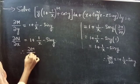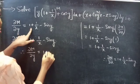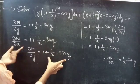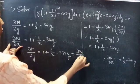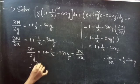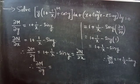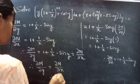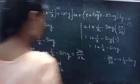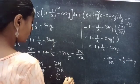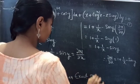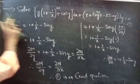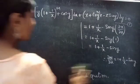Therefore, ∂M/∂y equals to 1 plus 1 by x minus sin y, and also ∂N/∂x equals to 1 plus 1 by x minus sin y. So we got ∂M/∂y equal to ∂N/∂x. From this, we can say that the given differential equation (equation 1) is an exact equation. Now we will find the general solution to the given exact equation.